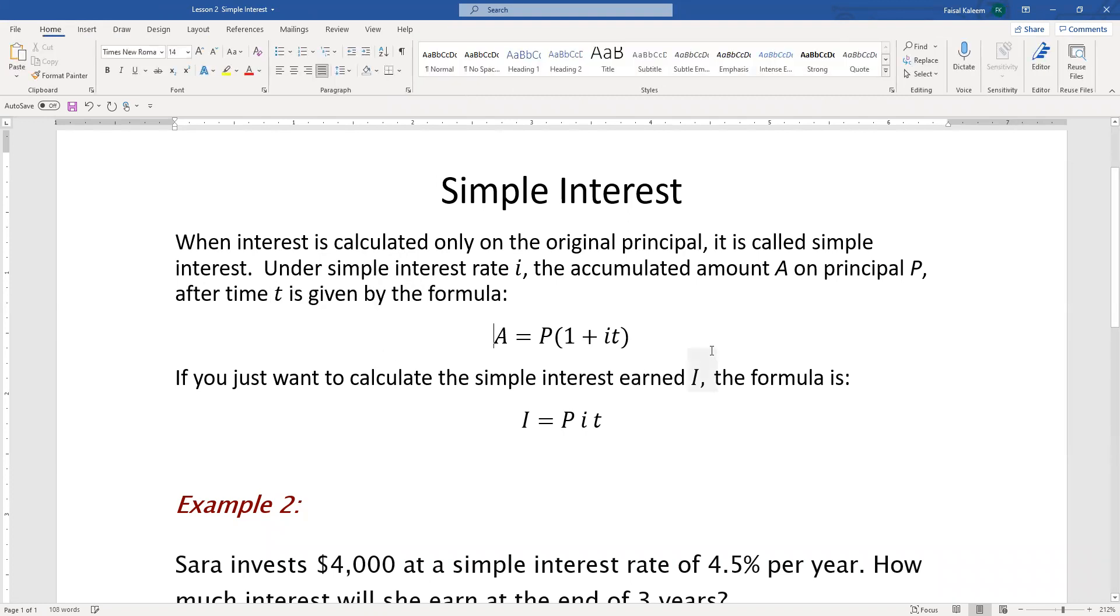is given by the formula A = P(1 + it). If you just want to calculate the amount of interest earned I, the formula is I = Pit.